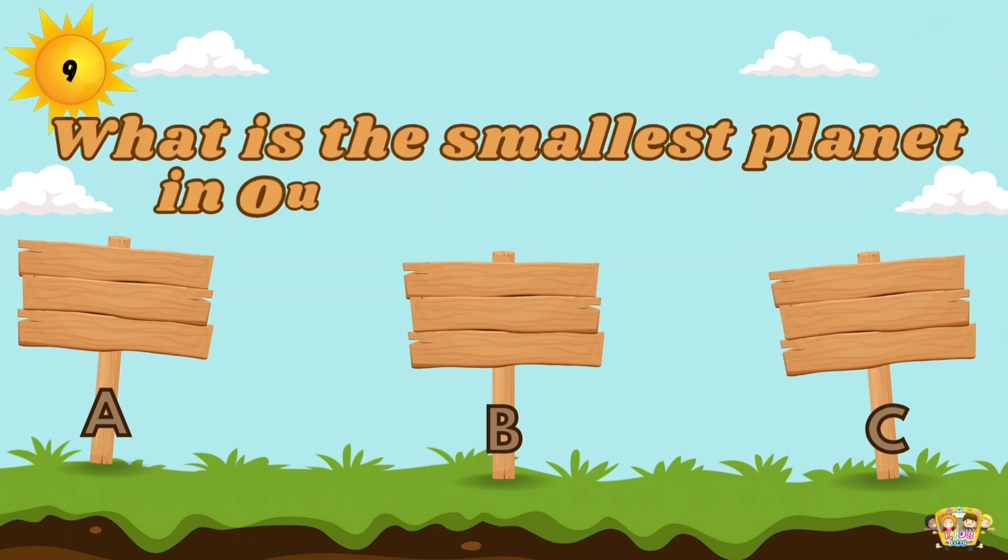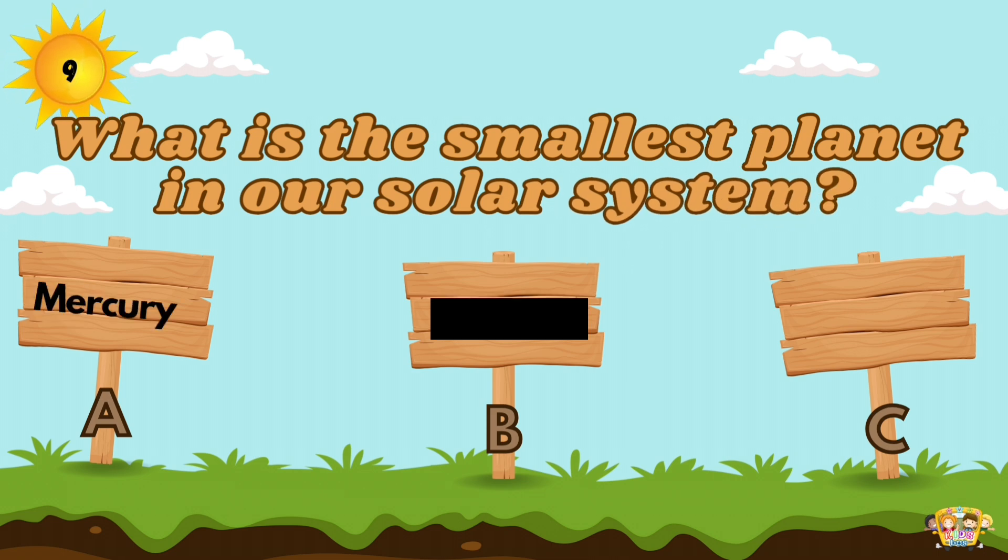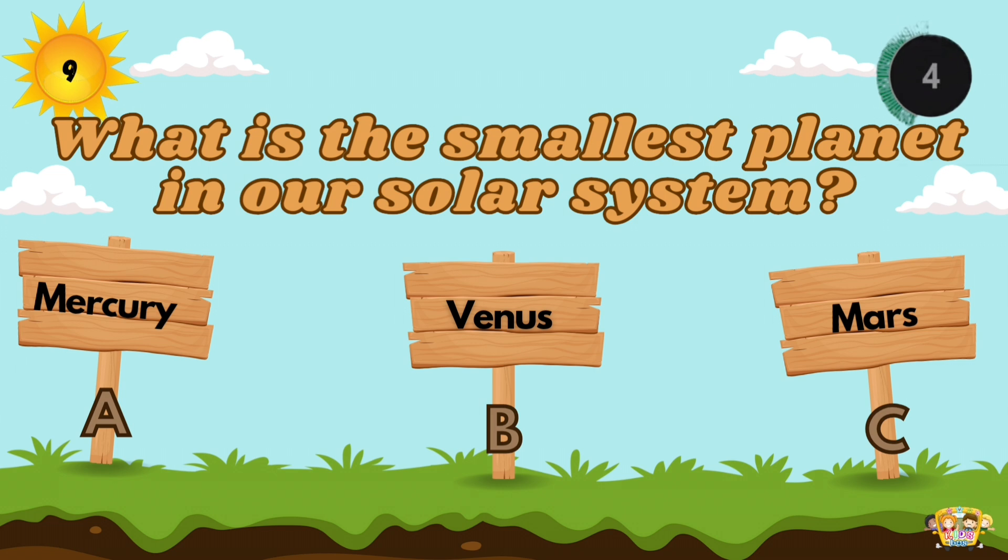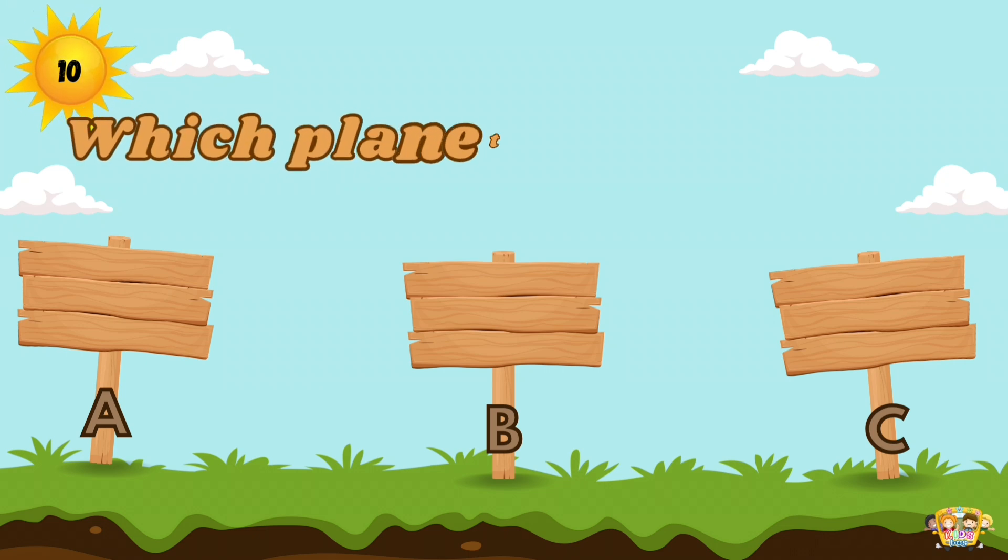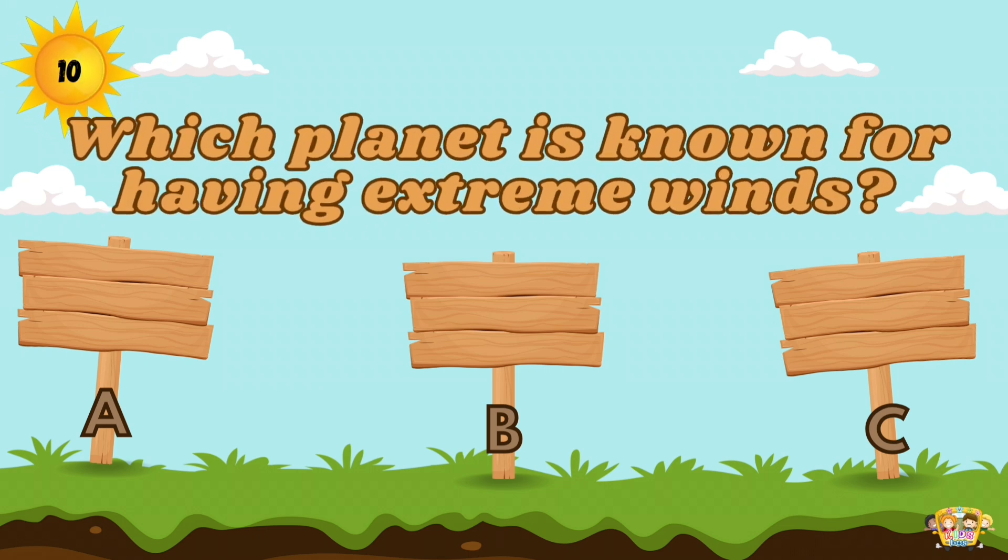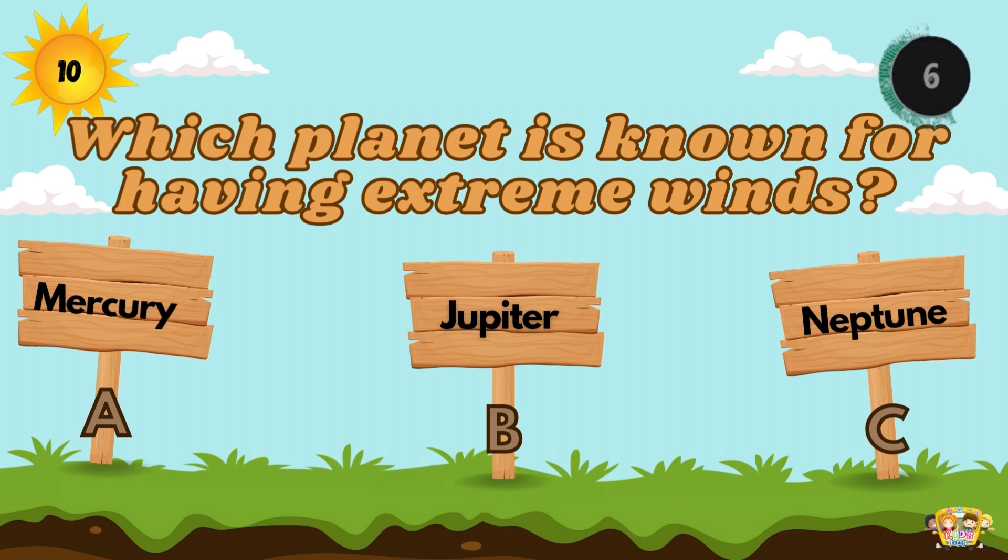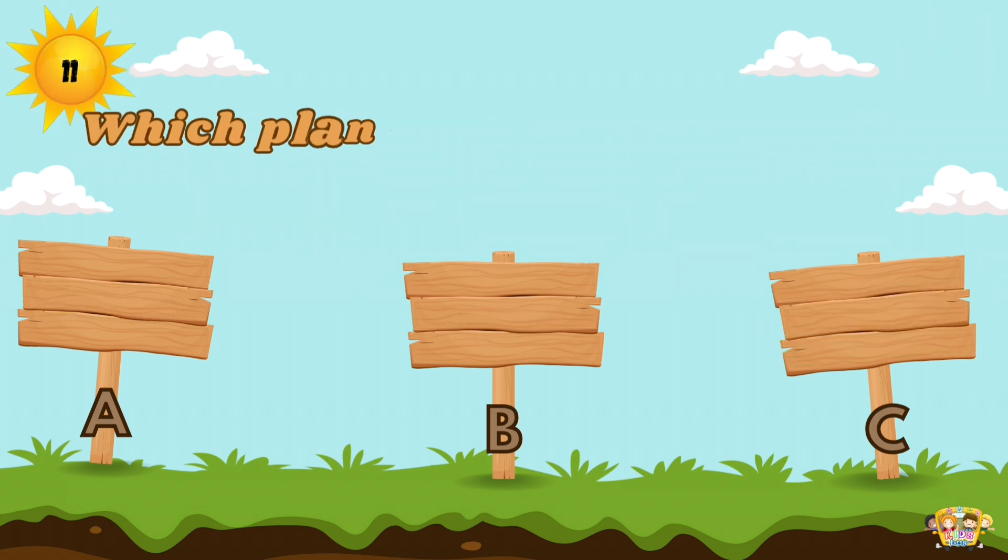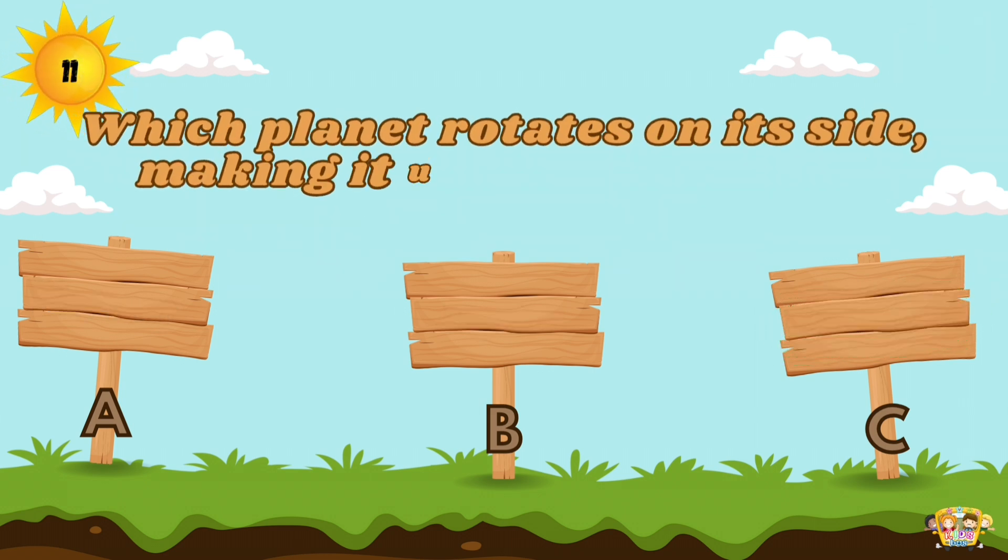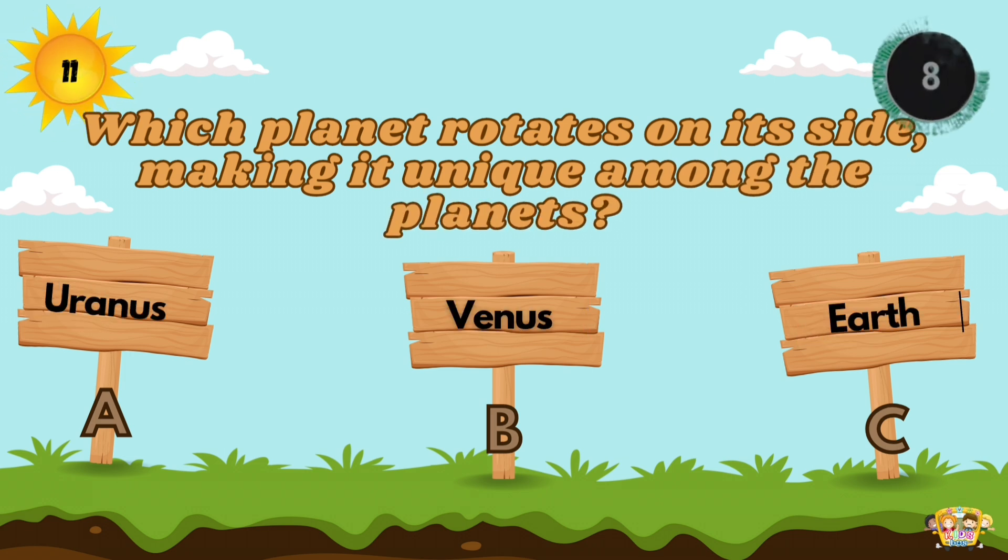Mercury is the smallest planet in our solar system. Neptune has the strongest winds in the solar system.